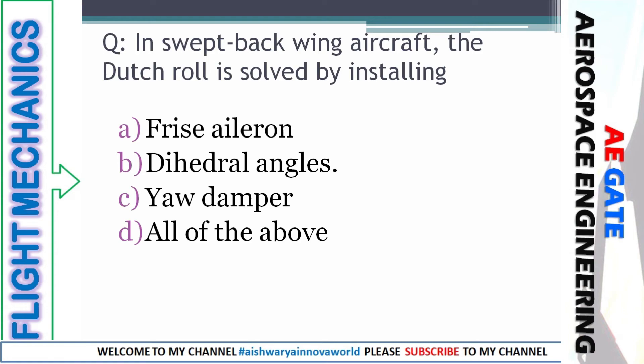Damping is increased by a swept-angle wing aircraft. Next: the Dutch roll is solved by installing — Frise aileron, dihedral angle, yaw damper, or all of the above. You must remember there is only one way to recover from Dutch roll: the yaw damper. That is option C.